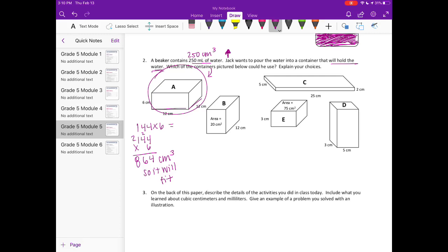Let's go on to B. We have the area of this, or the length times the width. They've already done that for us. 20 times 12 is equal to 240. So that would be too small, because 250 milliliters is what we need. This will only fit 240.